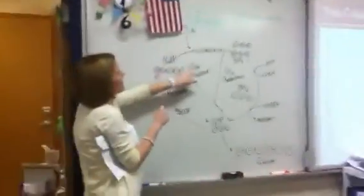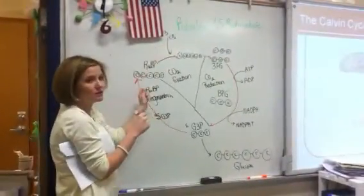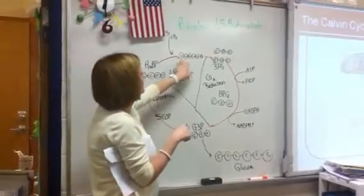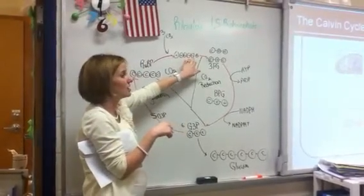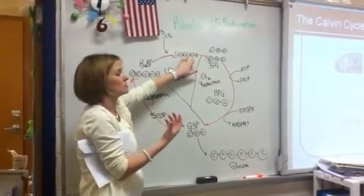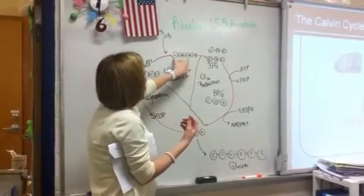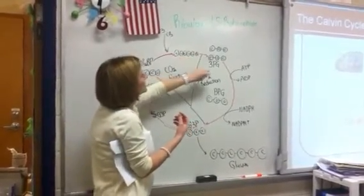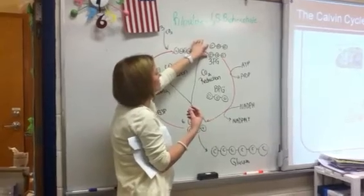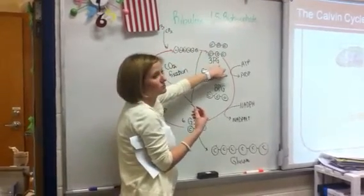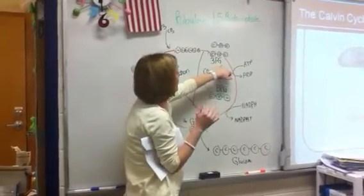So 1, 2, 3, 4, 5, plus that 1 makes 6. So you end up with a 6-carbon compound, okay? But it's going to be reduced. So that 6-carbon compound splits into two 3-carbon compounds, and those are called 3-PGs. We're just going to look at the abbreviations. 3-PGs.